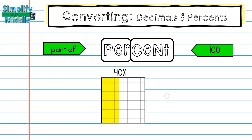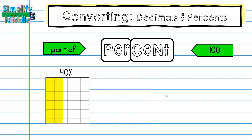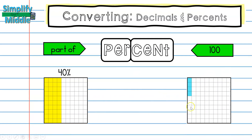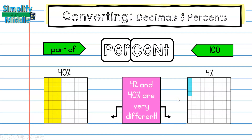Let's look at another example. In this box, I have 10 by 10 as well, so this is 100 pieces. And this time, I only have four of them that are shaded. So the percent of shaded on this box is 4%. Notice that there's a very big difference between 4% and 40%. We're going to look more into this as we do conversions.